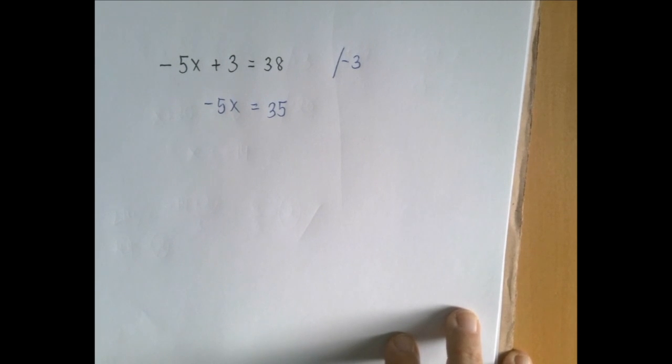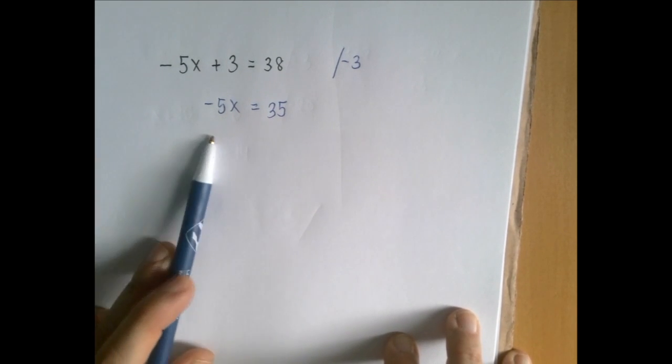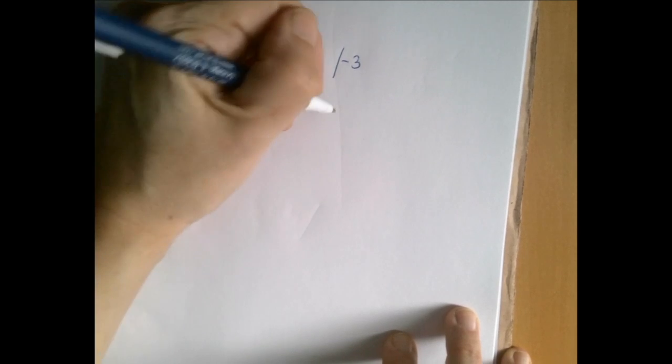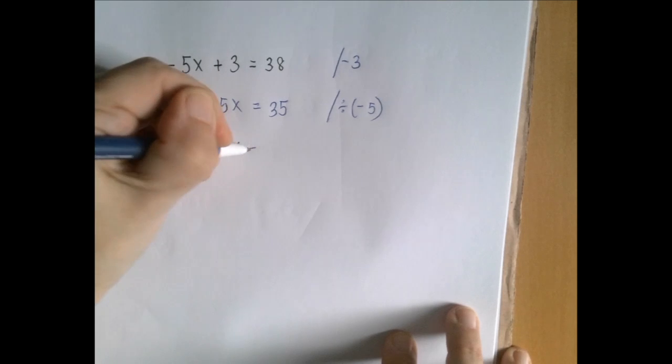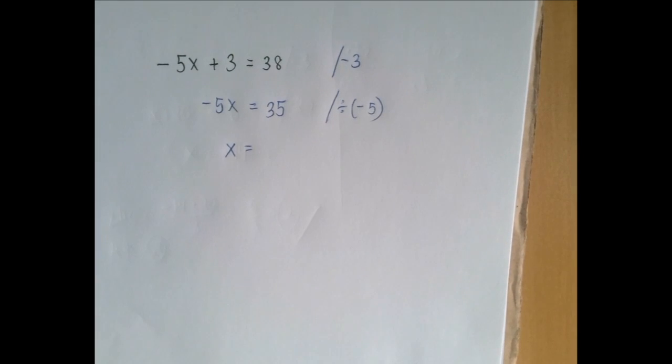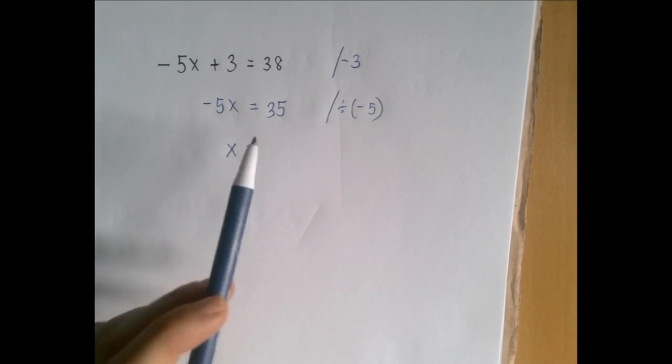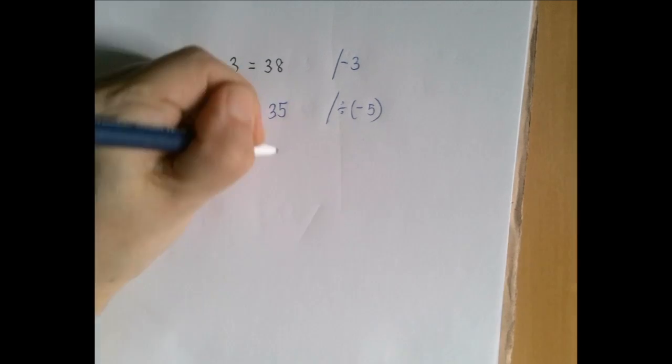And now we're going to divide both sides by whatever is multiplying x, which is negative 5 in this case. So we're going to divide both sides by negative 5. The left-hand side becomes x, and the right-hand side is going to be 35 divided by negative 5, which is negative 7.